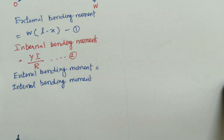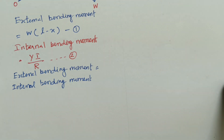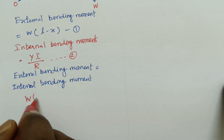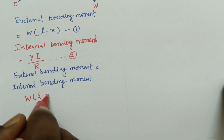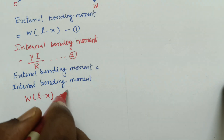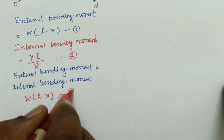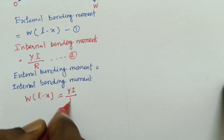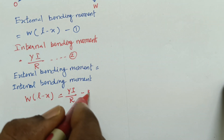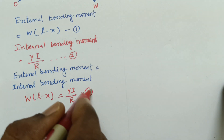In equilibrium conditions, the external bending moment equals the internal bending moment. Equating equation 1 and 2: W into (L minus X) equals YI by R. This is equation number 3.